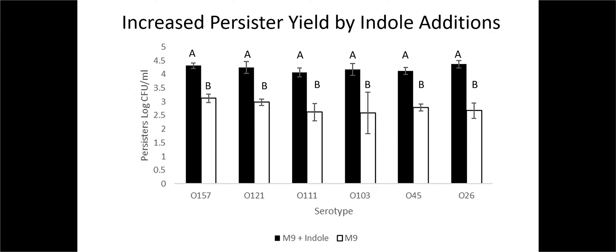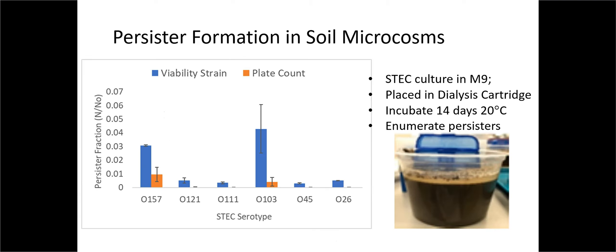We looked at indole in a defined medium. Then we looked into the soil, a module in this case. We said, does that induce persisters? And a bit like what you just mentioned, it does seem strain dependent. So O157 and O13, for example, they seem very good at forming persisters in the soil, whereas the other ones, not so much.